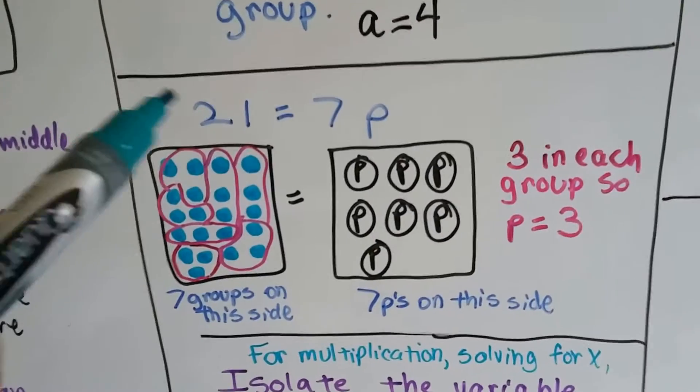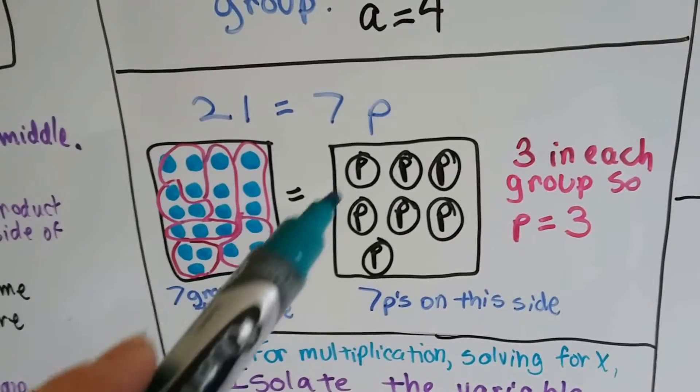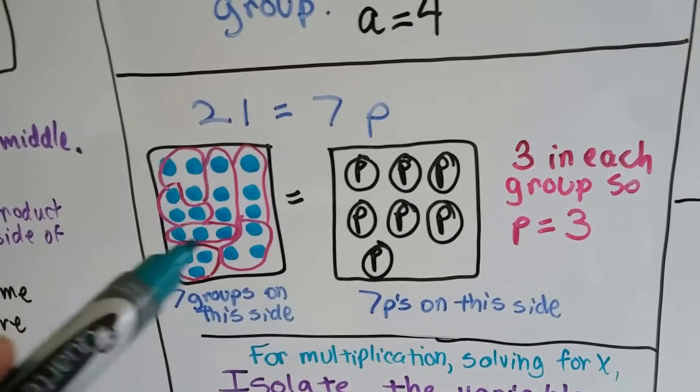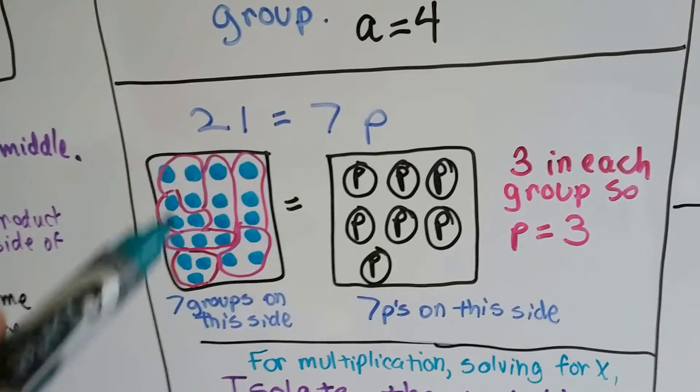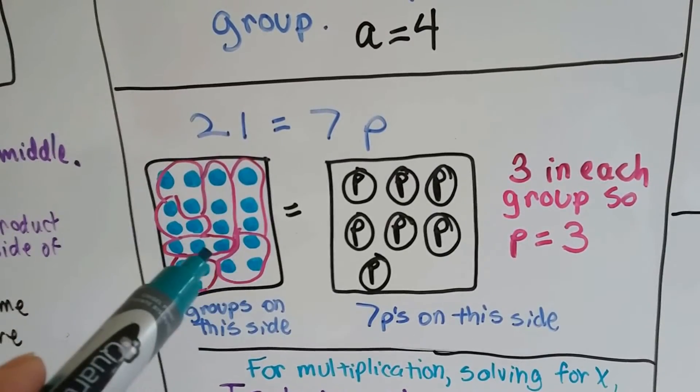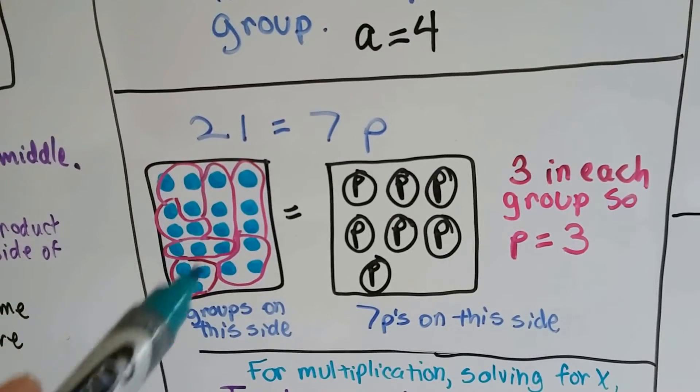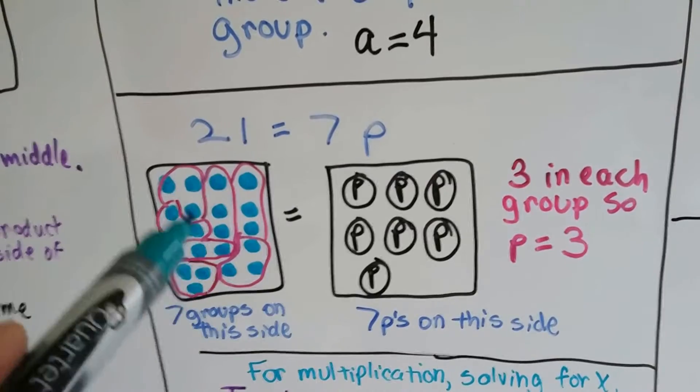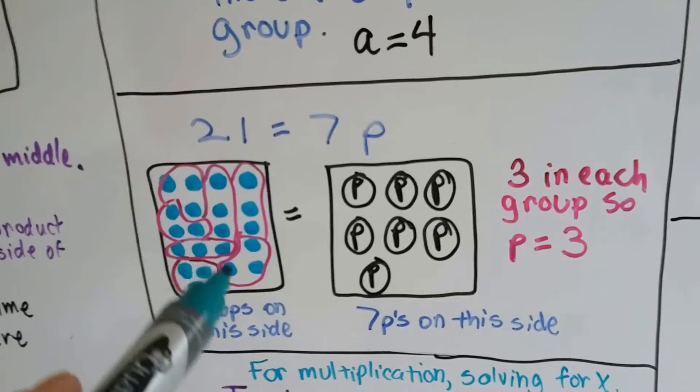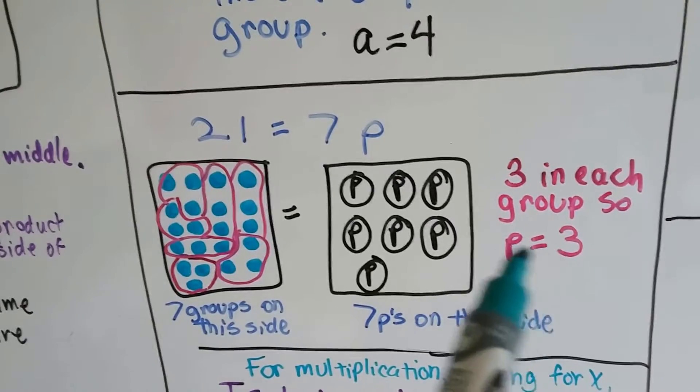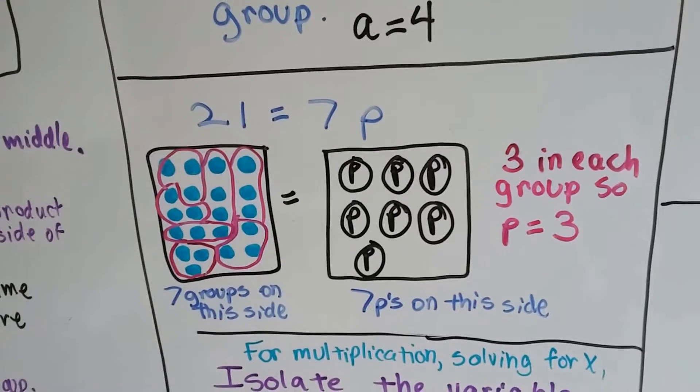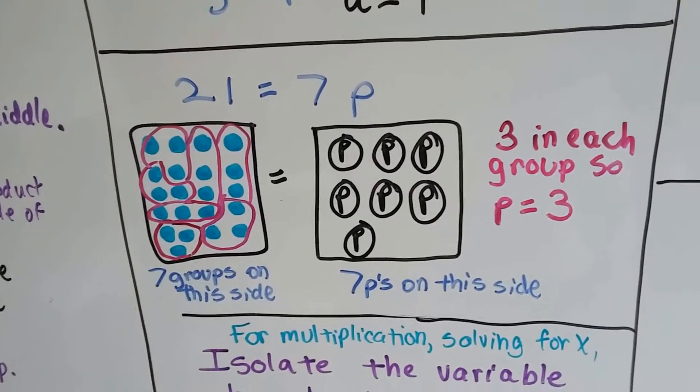Same with this one. If we've got 21 equals 7p, we make seven p's. We draw 21 dots. We put them into seven groups. We count how many are in the group. There's three in each group. I know I circled them weird. Sorry. They were kind of tight-packed in my box. I should have made a bigger box. So p equals 3. Seven p's on this side, seven groups on this side.